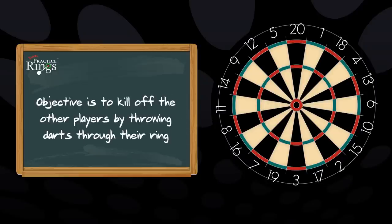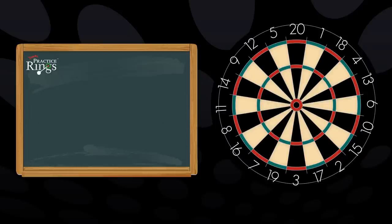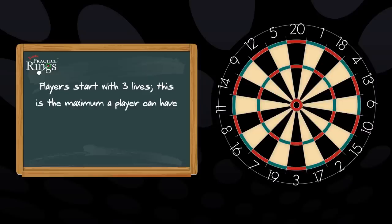The objective of the game is to kill your opponent off by throwing darts through their ring. Players start with a total of 3 lives. This is the maximum number of lives each player can possess at any one time.